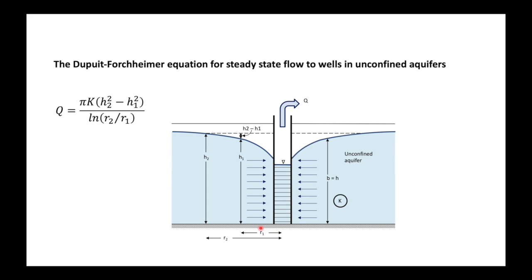That is why the Dupuit-Forchheimer equation looks a little bit different from the Theis equation. It states that the discharge Q at the well is pi times K times the head squared at the outer boundary minus the head squared at the inner boundary, all divided by the natural log of the outer radius divided by the inner radius.